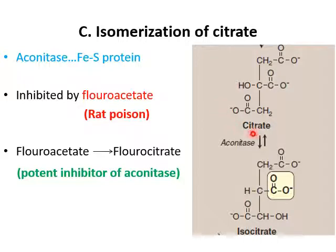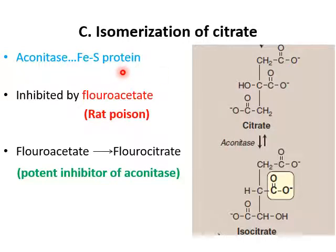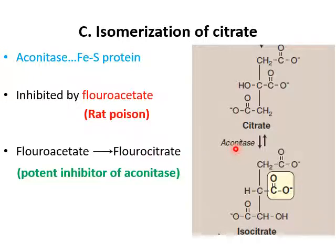In the next reaction, citrate is isomerized to isocitrate — isomerization involves rearrangement of atoms. This step is reversible and is catalyzed by aconitase, an iron-sulfur protein. Aconitase can be inhibited by fluoroacetate, which is a rat poison. In the body, fluoroacetate is first converted into fluorocitrate, which then inhibits aconitase, blocking the Krebs cycle on a non-physiological basis, meaning the inhibitor comes from outside the body.